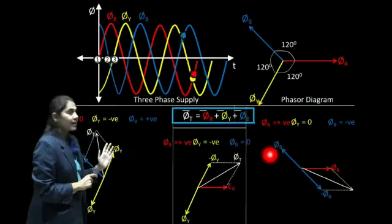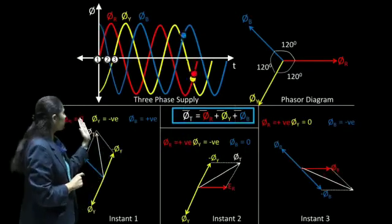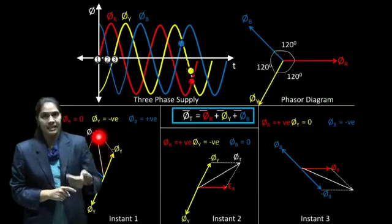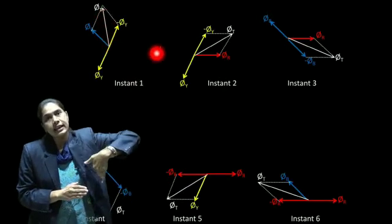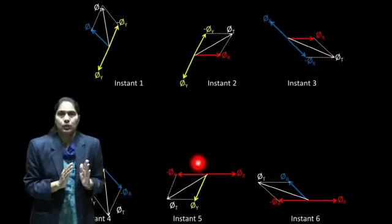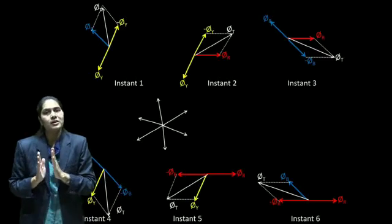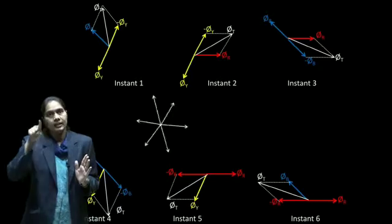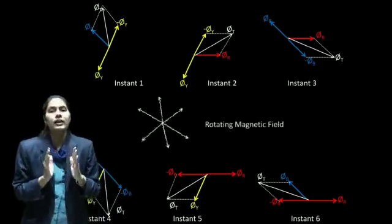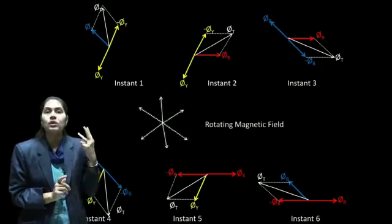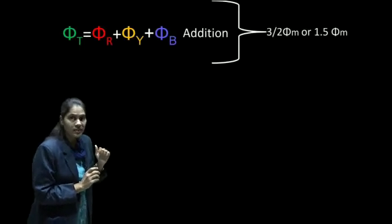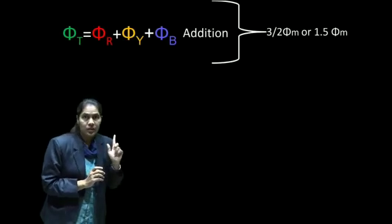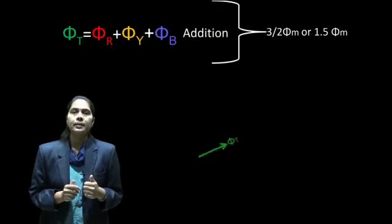Whatever resultants we are getting from instant number 1, 2, and 3, the resultant flux is getting inclined further at each instant. If we consider more instants, we can see that the resultant flux is continuously getting inclined through a 360-degree angle. So we can conclude that the resultant flux — that is the phasor addition of φR plus φY plus φB — is continuously rotating. We can say that we have a rotating magnetic flux if we supply three-phase AC to three coils connected in star or delta. The magnitude of this resultant flux is 1.5 times the maximum flux.